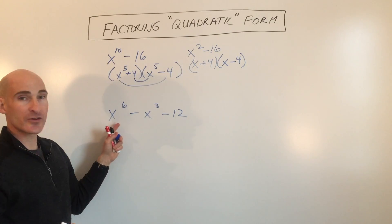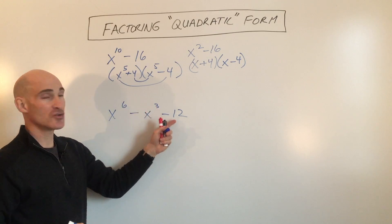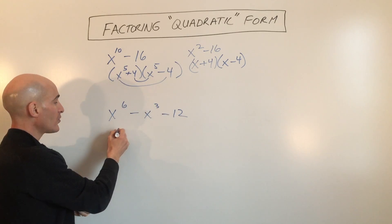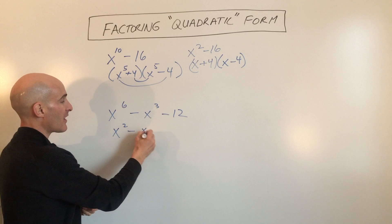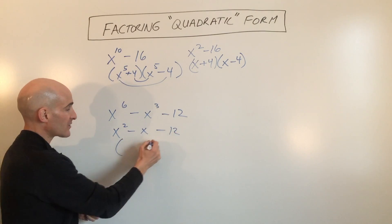Okay, so let's look at another example. Say we want to factor x to the 6th minus x cubed minus 12. We would know how to factor this if it was x squared minus x minus 12, right? We just factor it.